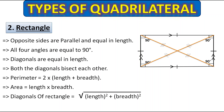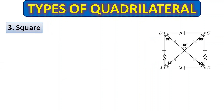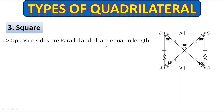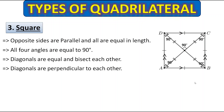Now let's learn the next type of quadrilateral, which is the square. The properties of a square are: opposite sides are parallel and all sides are equal in length. All four angles are equal to 90 degrees. Diagonals are equal and bisect each other — meaning they make half of each other. Diagonals are also perpendicular to each other, meaning they make 90 degrees when they intersect.